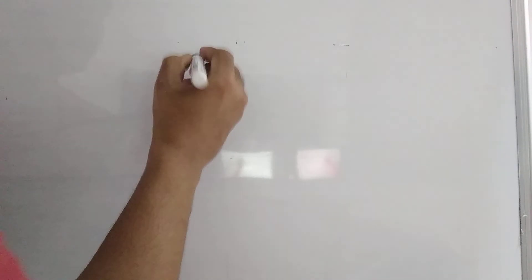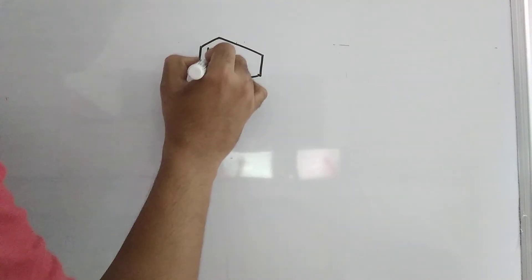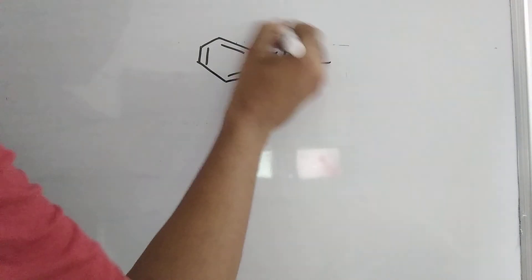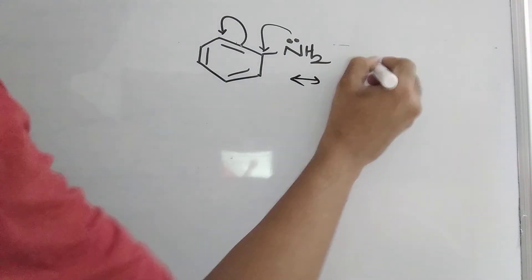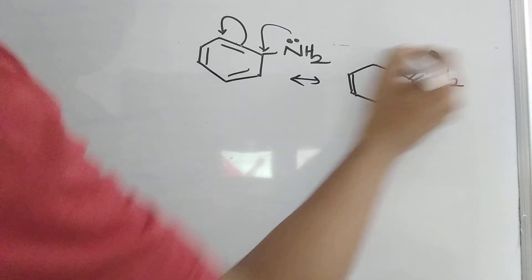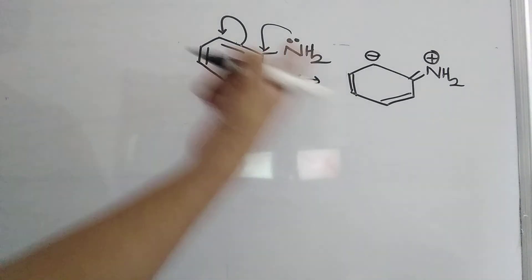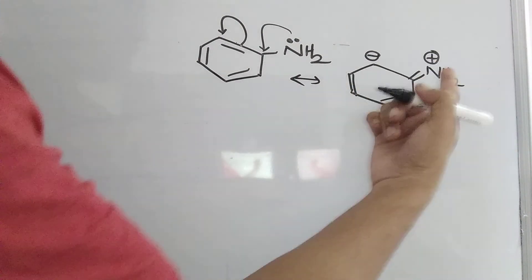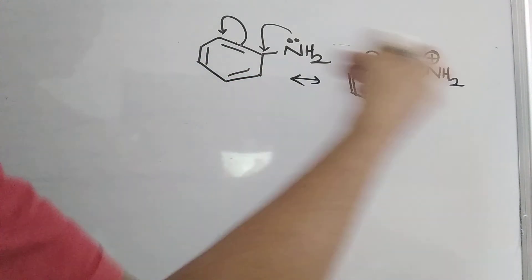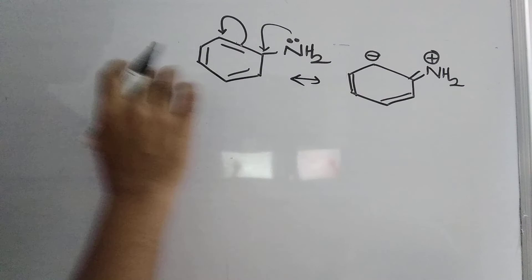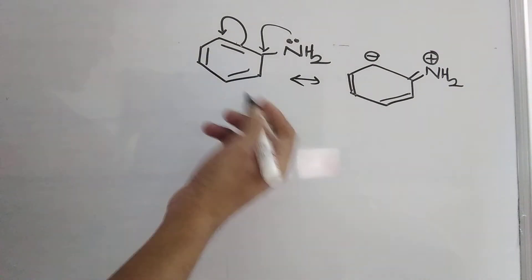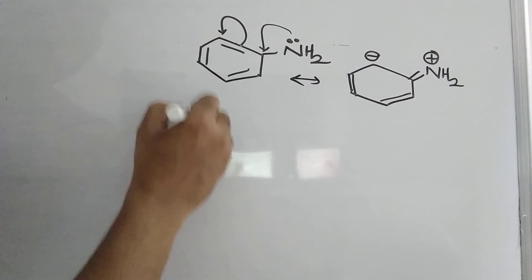Aniline is the weakest base. In aniline, the lone pair on nitrogen participates into the benzene ring through resonance. Because of this, nitrogen gets a partial positive charge while the ring gets negative charge. There is effectively no free lone pair on nitrogen, so it cannot act as a base. This effect of electrons entering the benzene ring from nitrogen is called the +M effect.